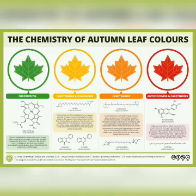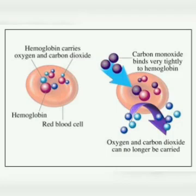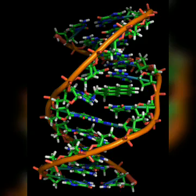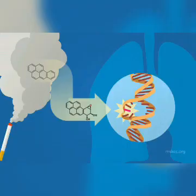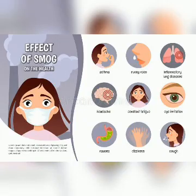Leaf smoke may contain hazardous chemicals such as carbon monoxide, which can bind with hemoglobin in the bloodstream and reduce the amount of oxygen in the blood and lungs. Another chemical mostly present in leaf smoke is benzopyrene, which has been shown to cause cancer in animals and is believed to be a major factor in lung cancer caused by cigarette smoke. Leaf smoke also causes irritation in the eyes, nose, and throat of healthy adults.